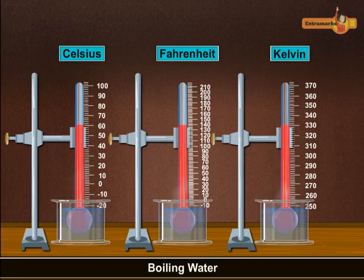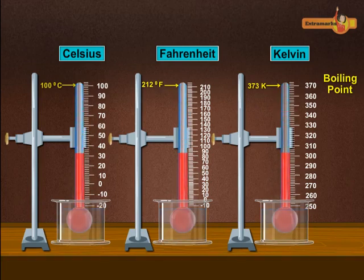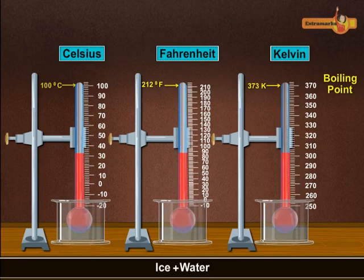It is 100 degrees Celsius for the Celsius scale, 212 degrees Fahrenheit for the Fahrenheit scale, and 373 Kelvin for the Kelvin scale. The thermometers are then dipped into the stirred mixture of pure ice and water.